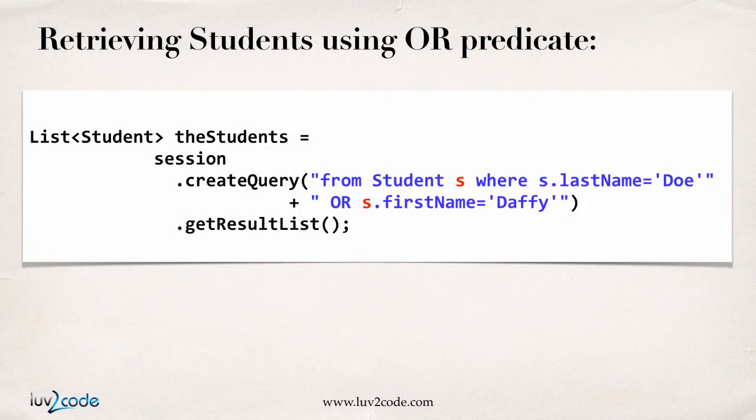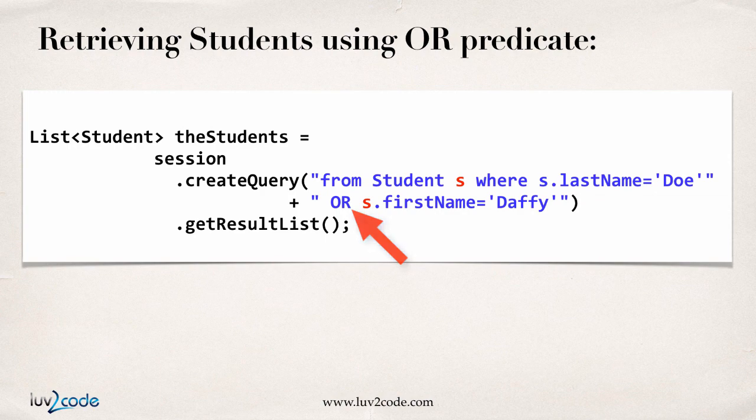You can also make use of predicates. For example, you could search for students that have a last name of Doe or a first name of Daffy. The query is very simple and straightforward — you write 'where S.lastName = Doe or S.firstName = Daffy', then call .list(). That's it — very similar to doing an SQL query.